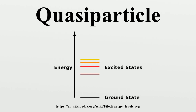This electron with a different mass is called an electron quasi-particle. In another example, the aggregate motion of electrons in the valence band of a semiconductor is the same as if the semiconductor contained instead positively charged quasi-particles called holes.